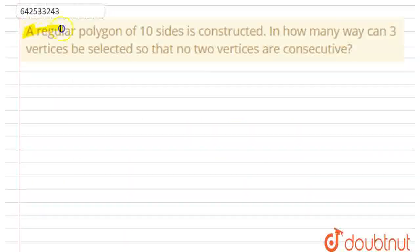Hello everyone, let's start this question. This question says: a regular polygon of 10 sides is constructed. In how many ways can 3 vertices be selected so that no 2 vertices are consecutive?